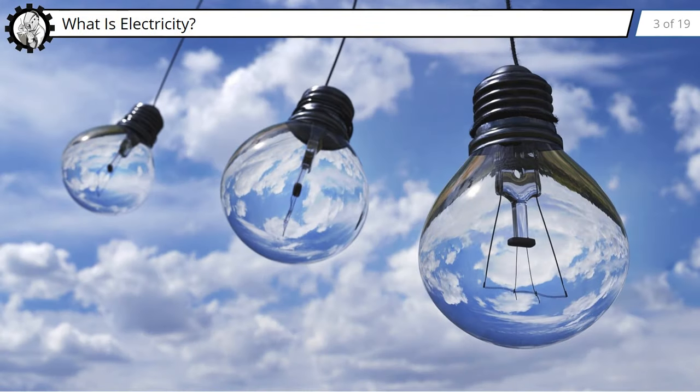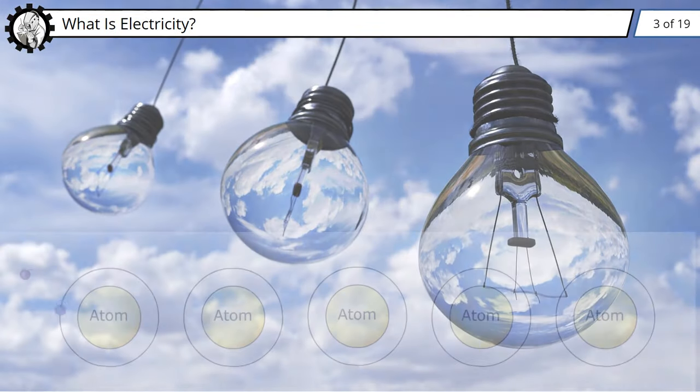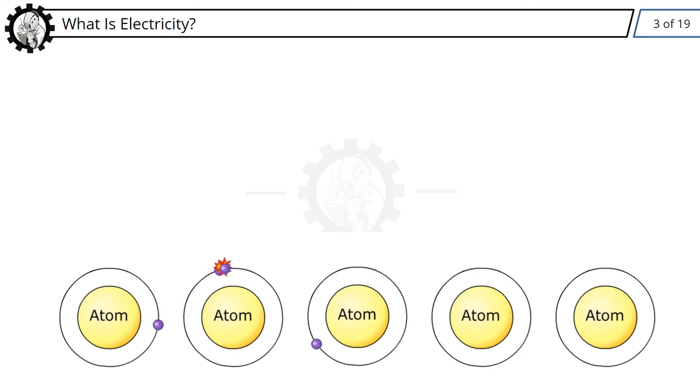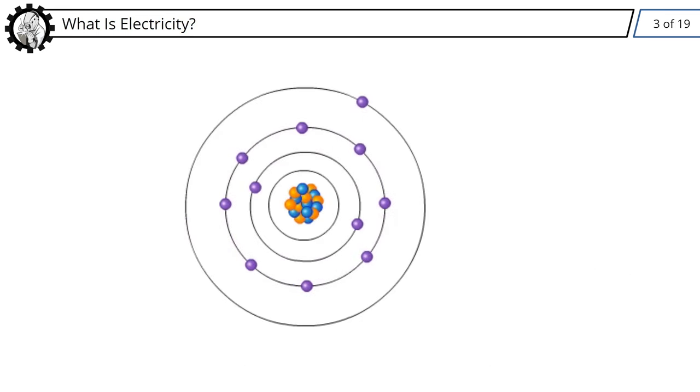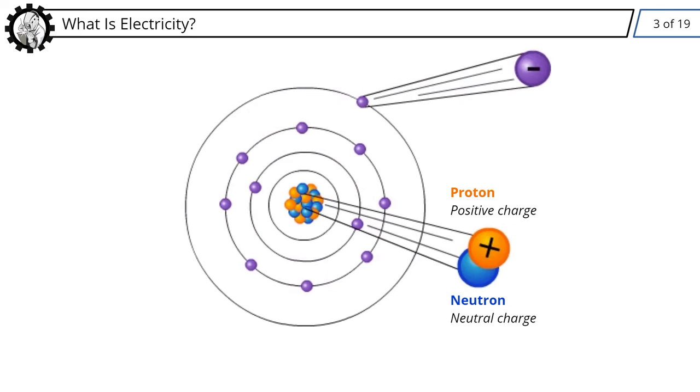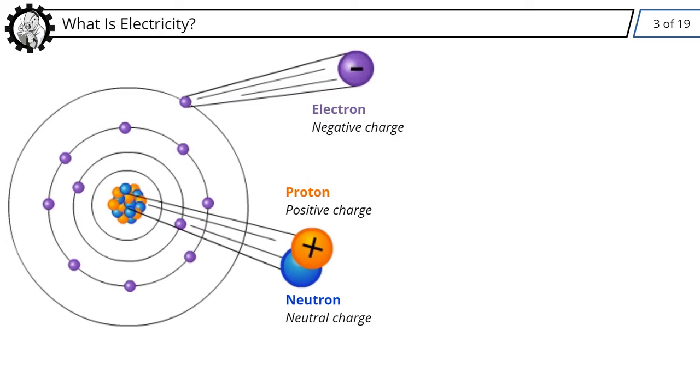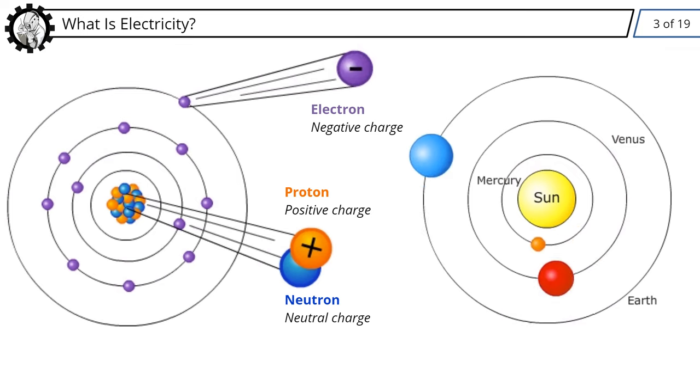We'll start with the fundamentals. What is electricity? Electricity is the flow of electrons from one atom to the next. At the center of the atom is the nucleus. It contains neutrons, which are neutrally charged, and protons, which are positively charged. Electrons are negatively charged, and they orbit around the nucleus, similar to the way planets orbit the Sun.